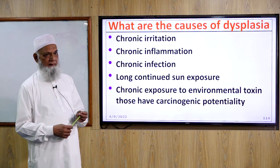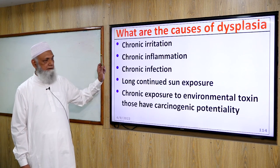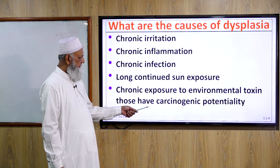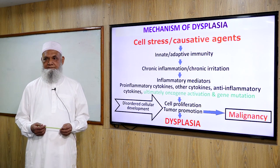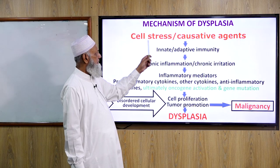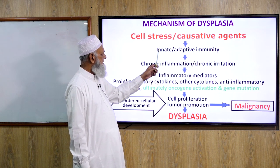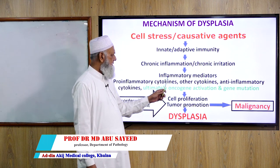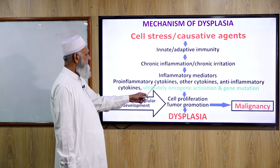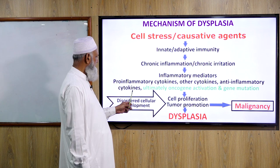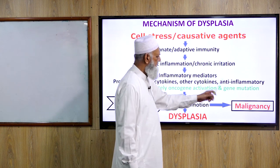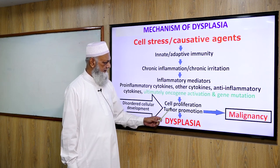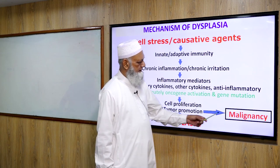Causes of dysplasia: chronic irritation, chronic inflammation, chronic infection, long-continued sun exposure, and chronic exposure to environmental toxins with carcinogenic potential. Mechanism of dysplasia: cell stress and positive agents cause activation of innate and adaptive immunity. Chronic inflammation and irritation lead to inflammatory mediators, pro-inflammatory cytokines, anti-inflammatory cytokines, ultimately causing oncogene activation and gene mutation, resulting in disordered cellular development, cell proliferation, tumor promotion, and dysplasia, ultimately leading to malignancy. Mild and moderate grades of dysplasia reverse when the inciting agent is withdrawn, but carcinoma in situ never reverses to normal.